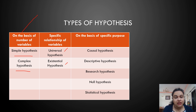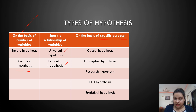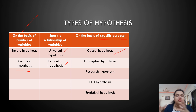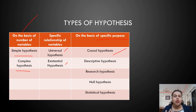The third classification is on the basis of specific purpose. In specific purpose, there are five types. The first is causal — for example, if you play a lot, then you will be tired. The next type under specific purpose is descriptive hypothesis.